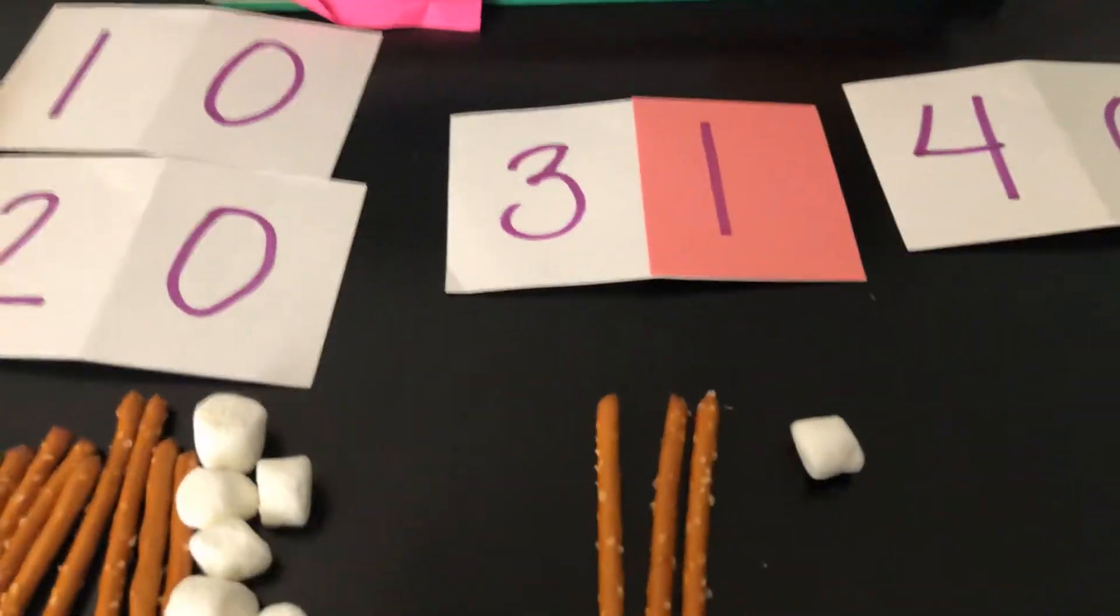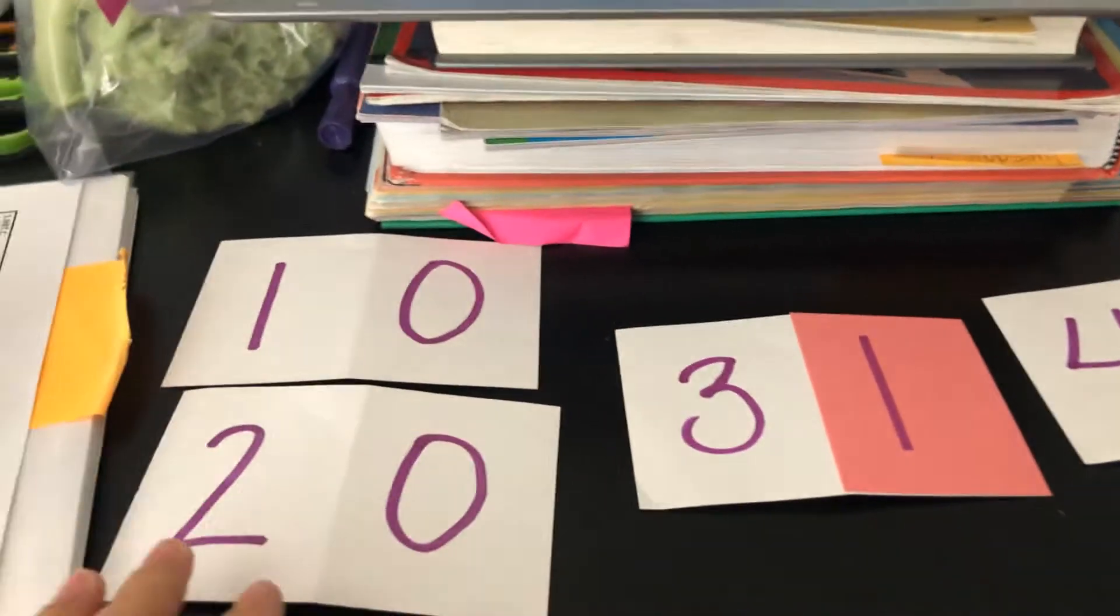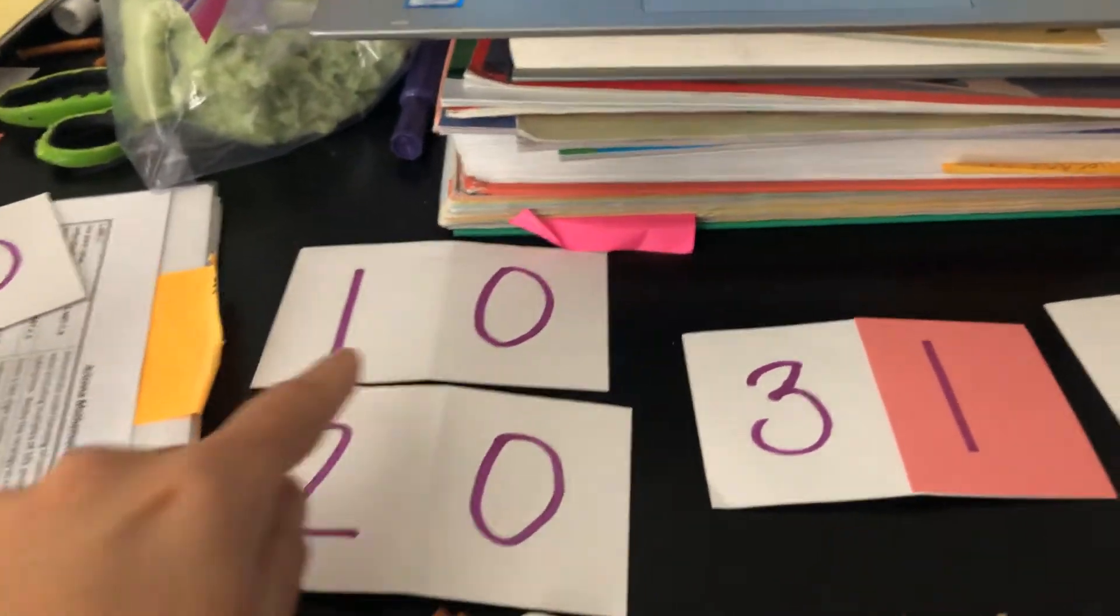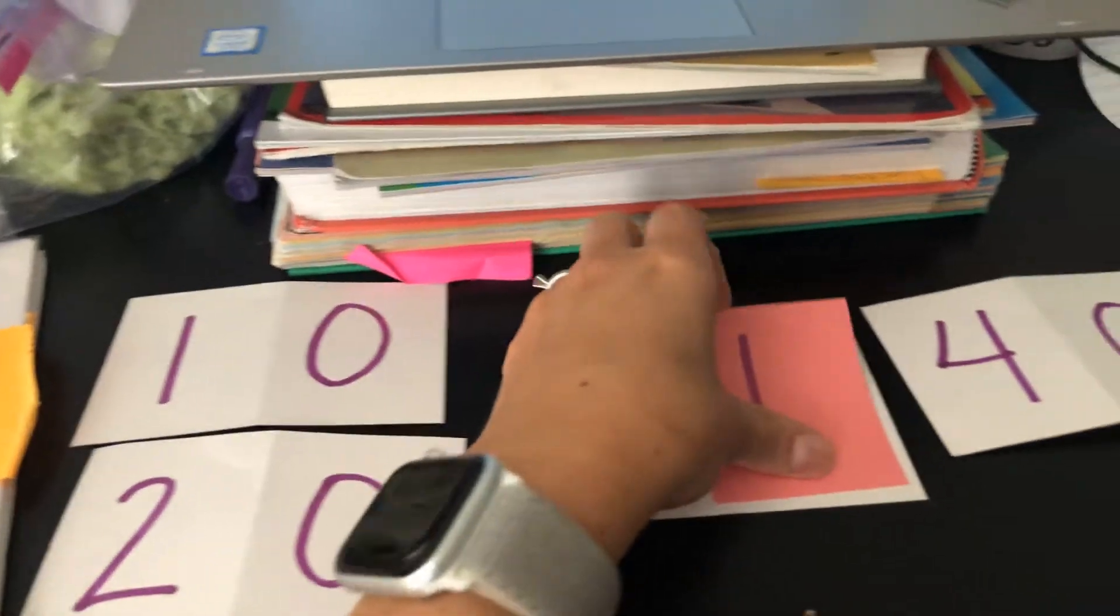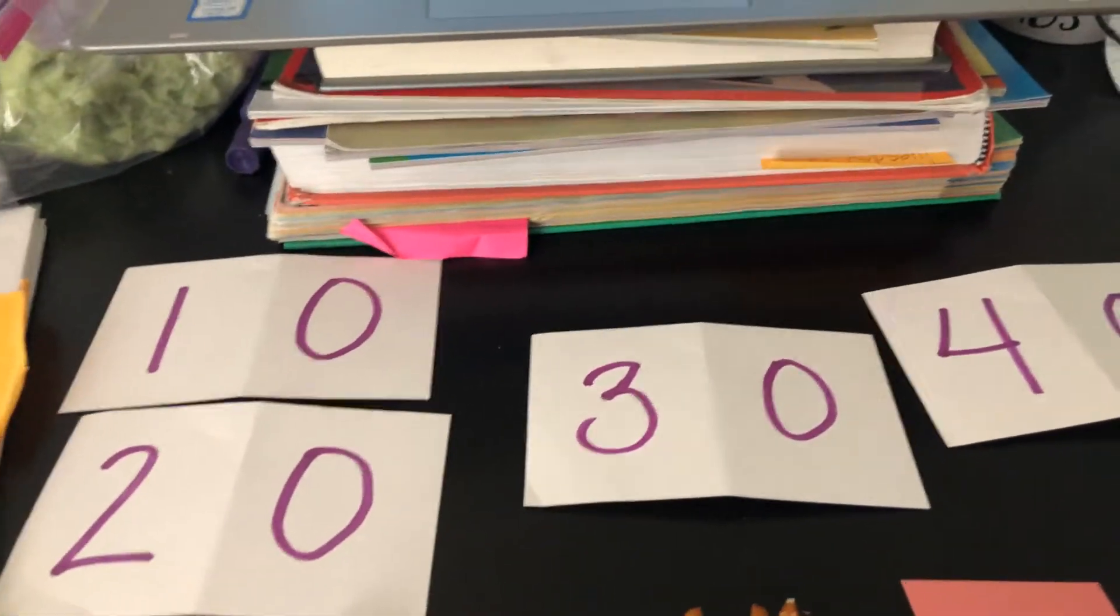So, if you look at what Mrs. Lloyd did, I didn't have our secret code cards, so I took index cards and I folded them in half, and I wrote all of our decade numbers, 10, 20, 30, 40, and I did that all the way to 100.